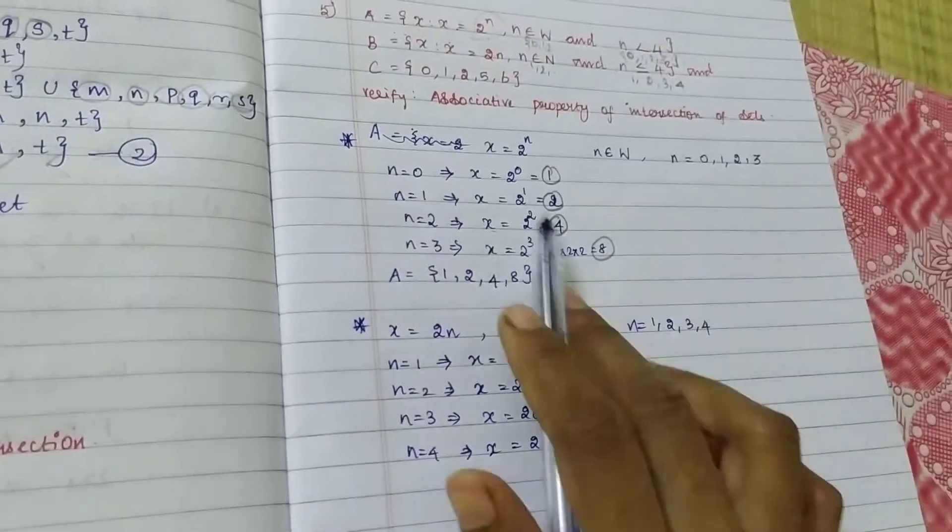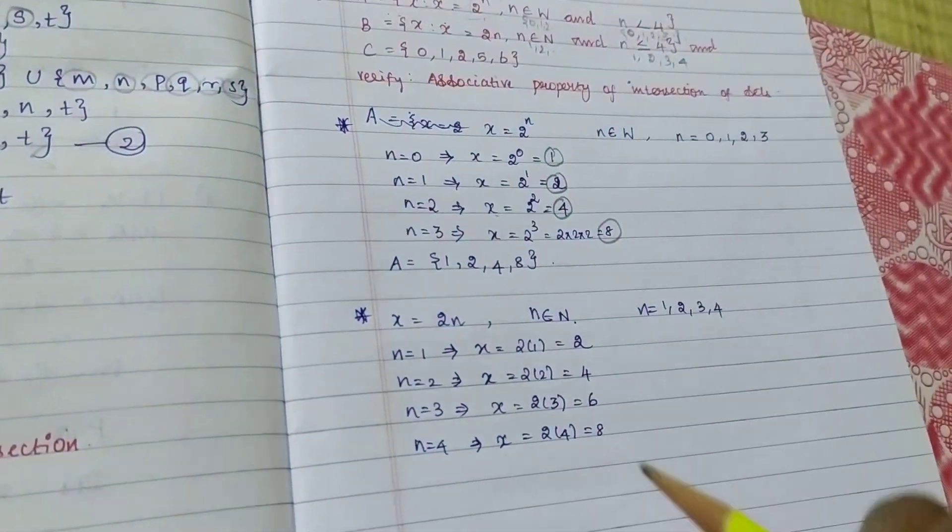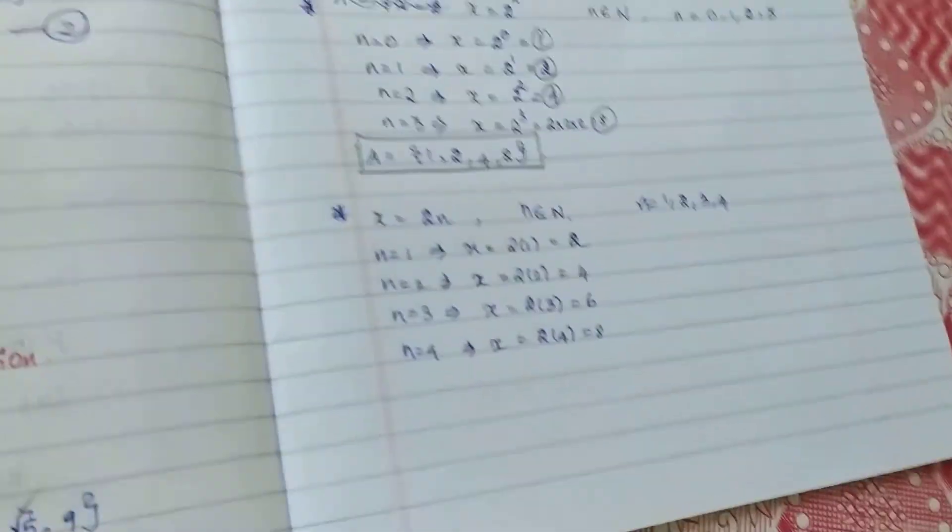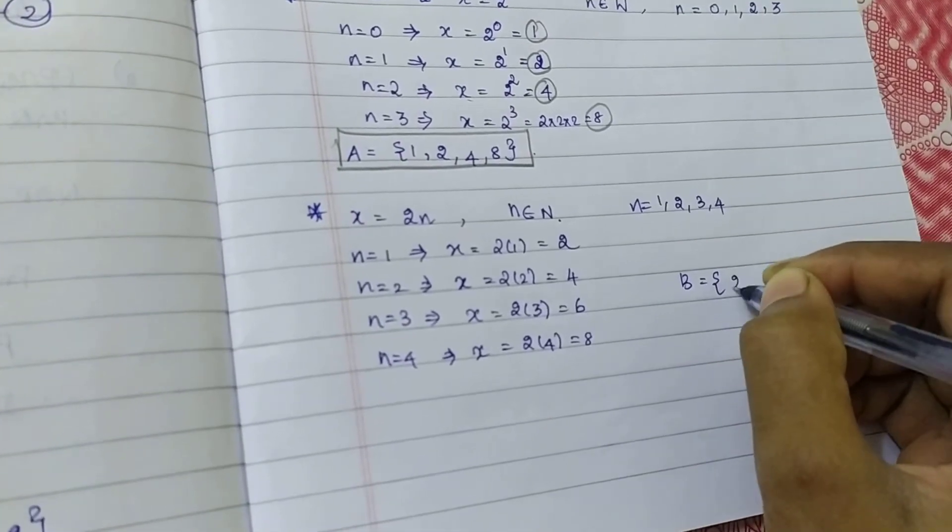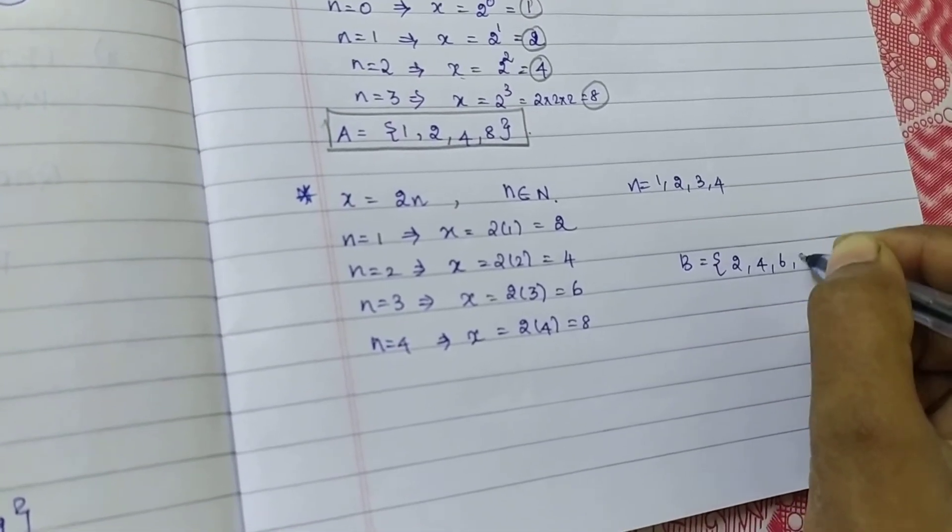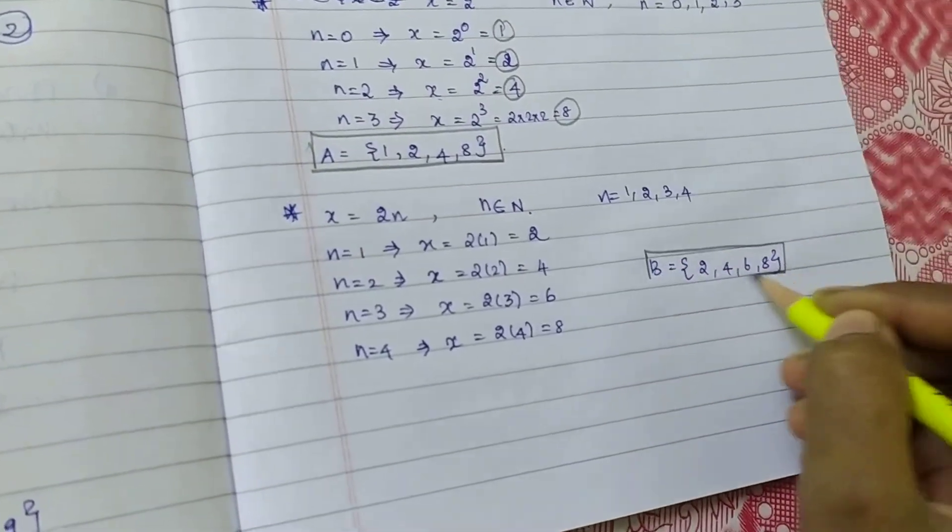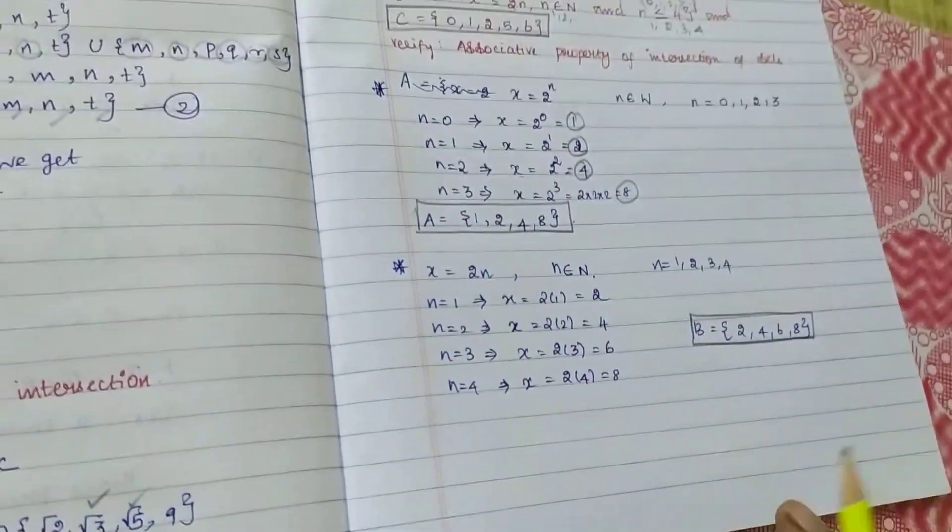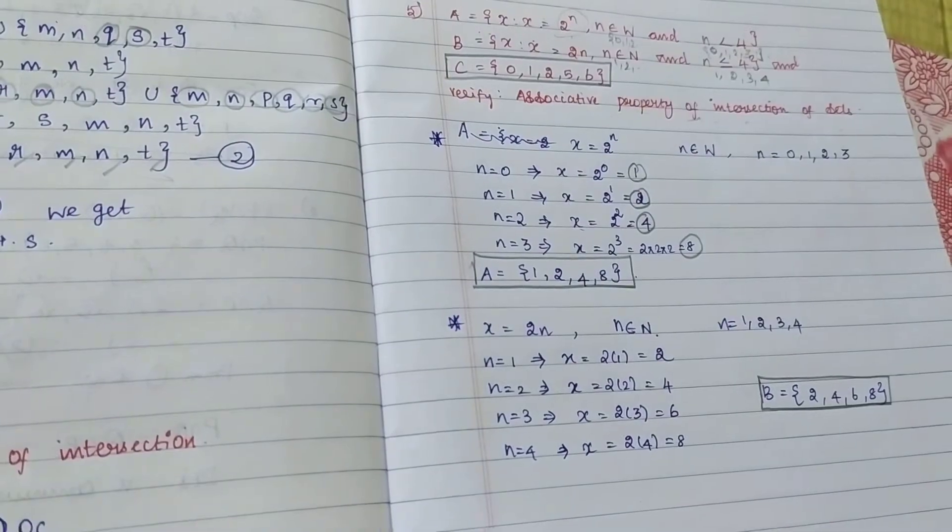So, what they asking? The associative property I am verifying. So, highlight this value. A value. And, what is the B value? B is nothing but 2, 4, 6, 8. This is your C value. What they are asking? Associative of the intersection of the set.